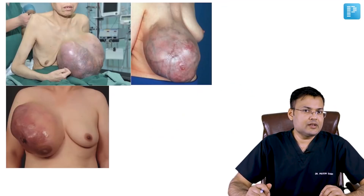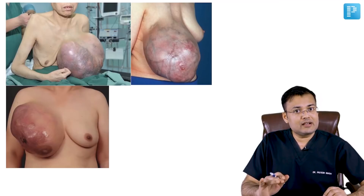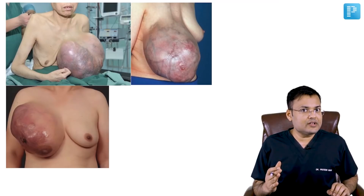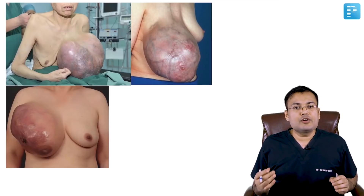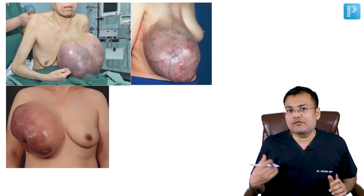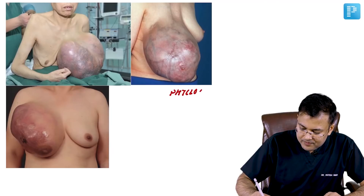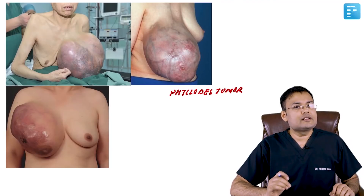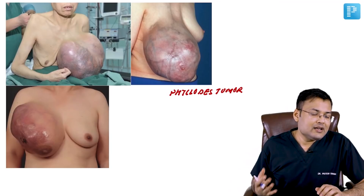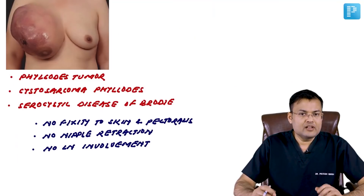In these images of phyllodes tumor, you can notice the affected breast is massively enlarged and the surface of the breast is bosselated — a bosselated surface is also seen in lipoma. Because of rapid growth of the tumor, there is pressure atrophy and necrosis of the overlying skin, resulting in multicolored skin. This tumor is called phyllodes tumor, also known as cystosarcoma phyllodes or serocystic disease of Brodie.